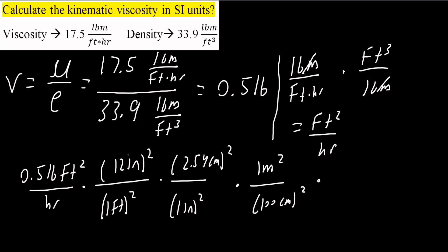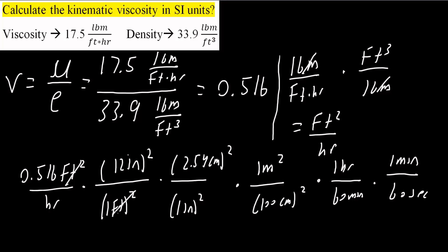For the time conversion: 1 hour is 60 minutes, and 1 minute is 60 seconds. Checking units: feet squared cancels, inches squared cancel, centimeters squared cancel — leaving meters squared. Hours cancel, minutes cancel — leaving seconds. So we end up with meters squared per second, which is the correct SI unit.